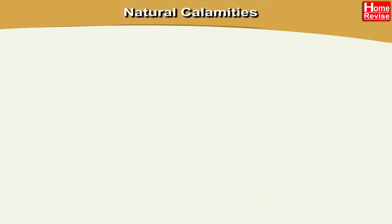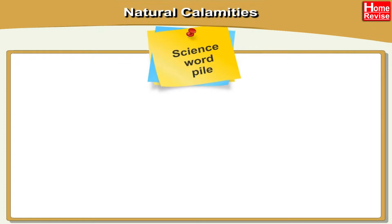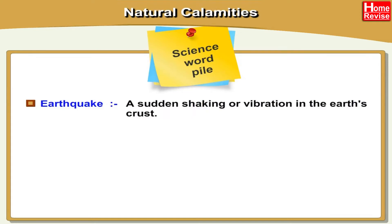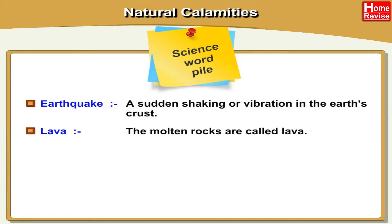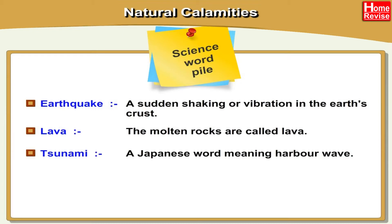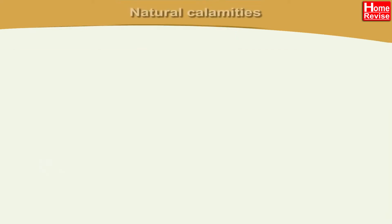Chapter 6: Natural Calamities. Science Word Pile — let us first study meanings of some important words in this chapter. Here are some important words with their meanings. Earthquake: a sudden shaking or vibration in the earth's crust. Lava: the molten rocks are called lava. Tsunami: a Japanese word meaning harbour wave. Famine: acute scarcity of food.